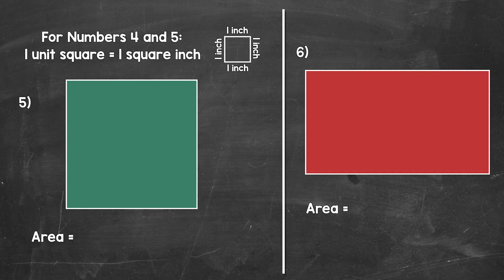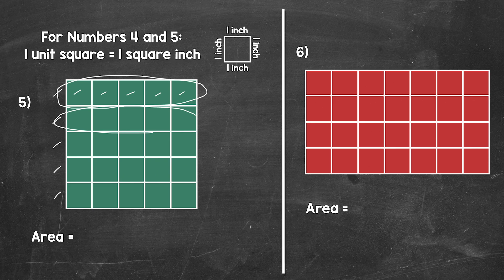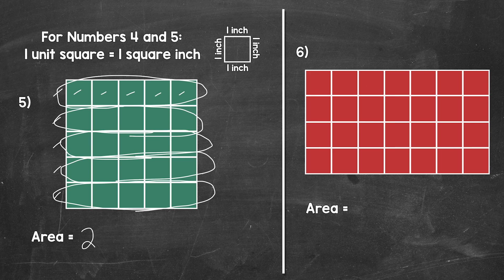Let's move on to numbers five and six. Each unit square is one square inch, and we can see our unit square at the top of the screen with side lengths of one inch. Let's cover our shapes with unit squares — each unit square has an area of one square inch. Looking at number five, let's skip count here. We have one, two, three, four, five rows with one, two, three, four, five squares in each row. So we have five, 10, 15, 20, 25. So the area of this square is 25 square inches.